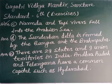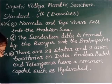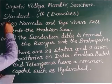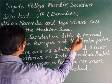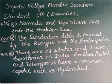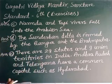Next question: name the delta formed by the Ganga and the Brahmaputra. We discussed on page number 52 that the Sundarbans delta is formed where the Ganga and Brahmaputra flow into the Bay of Bengal. So the correct answer is: the Sundarbans delta is formed by the Ganga and the Brahmaputra.